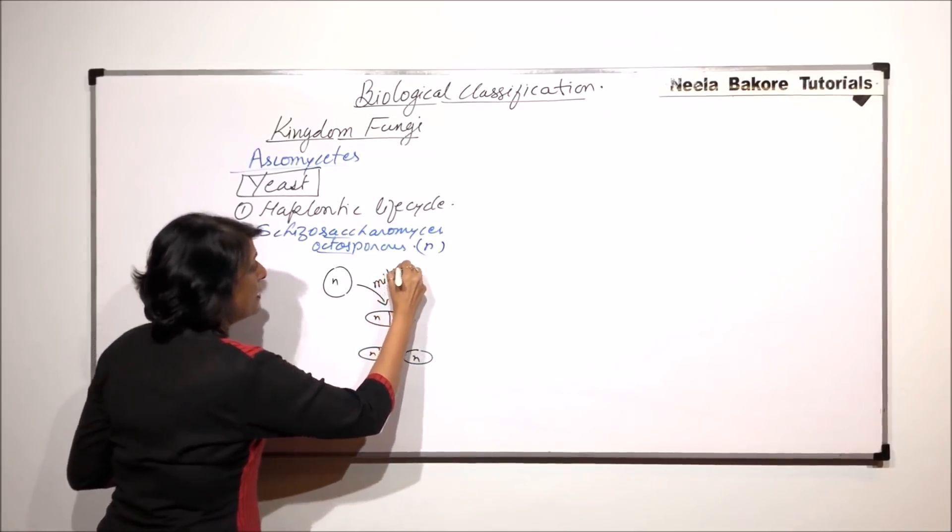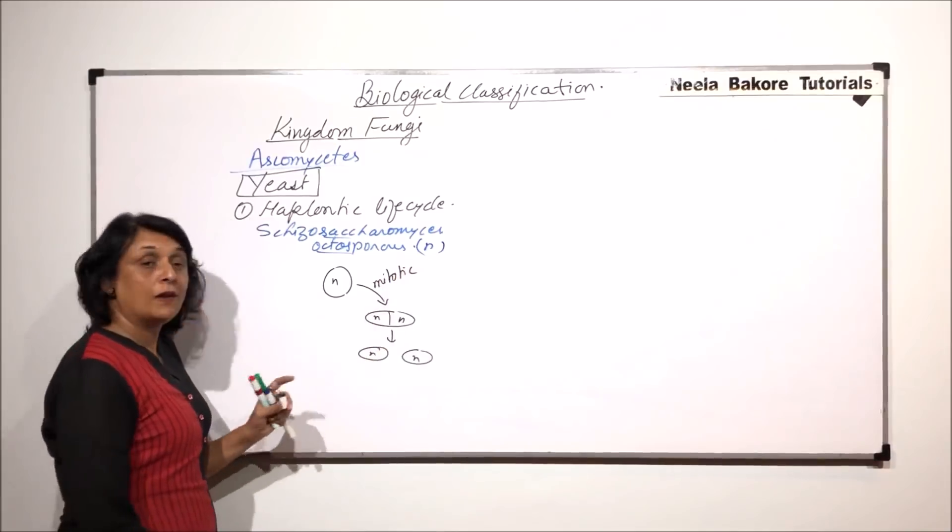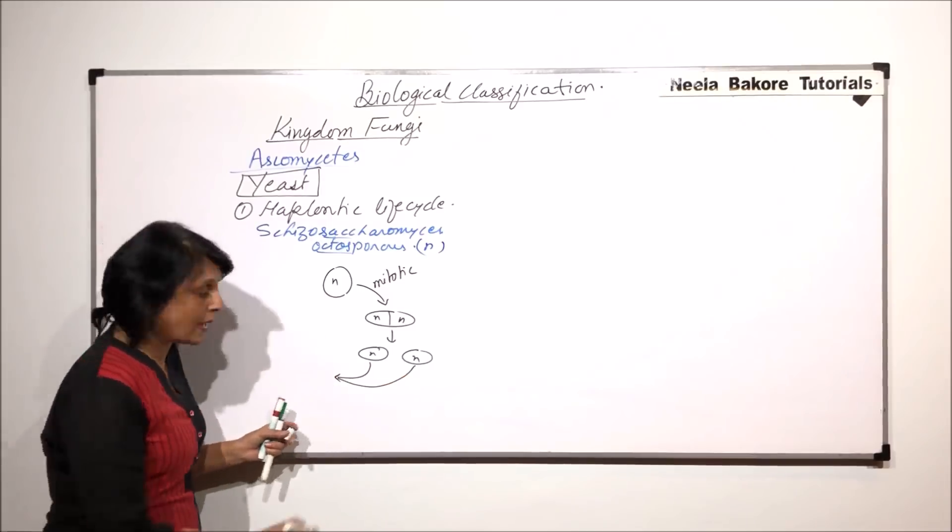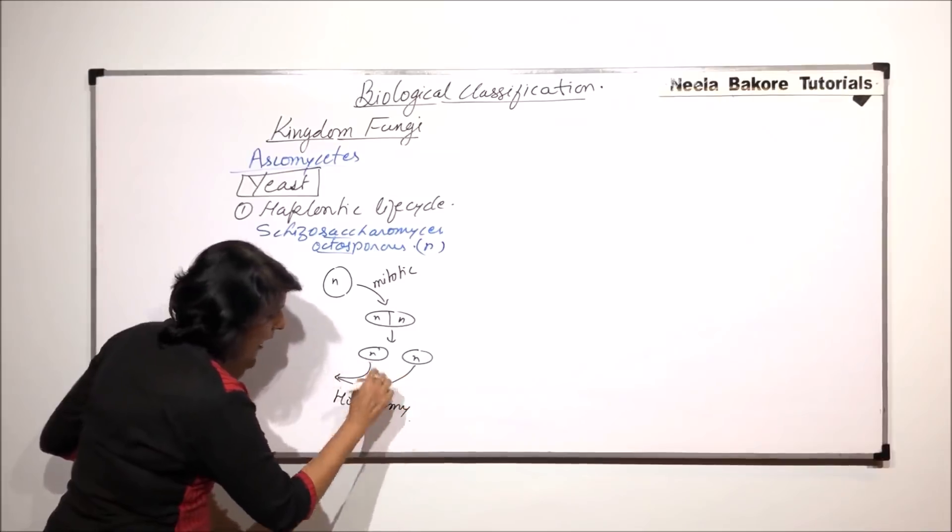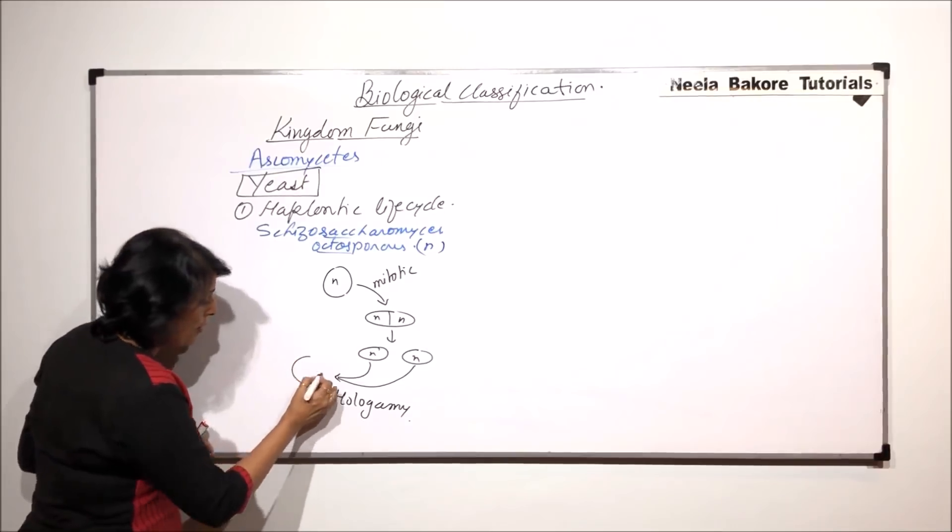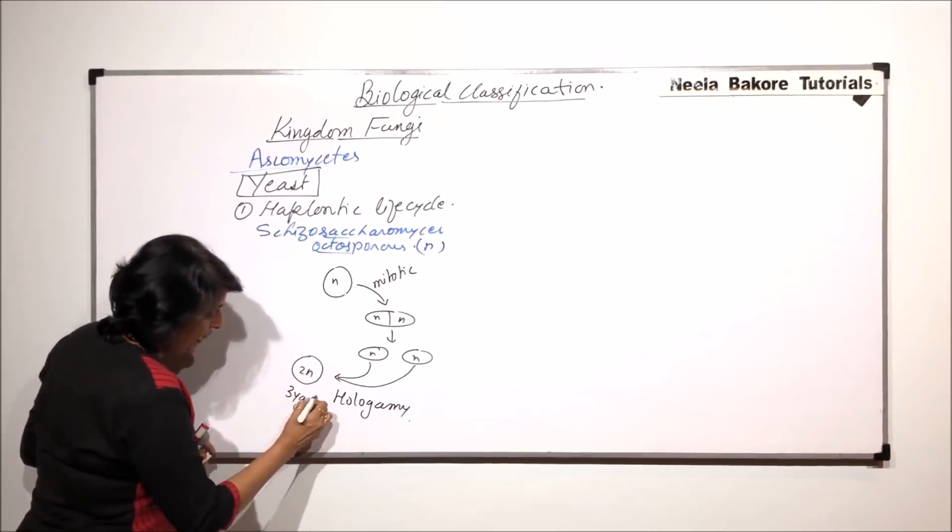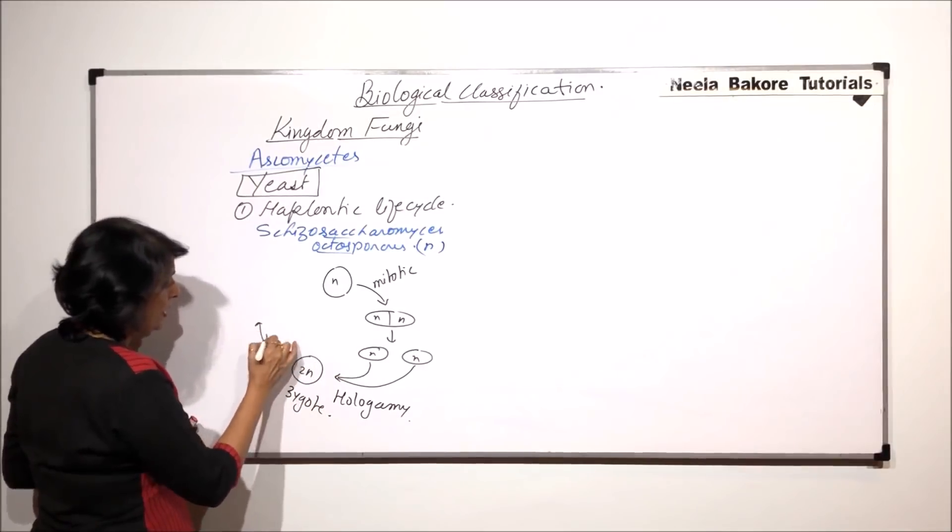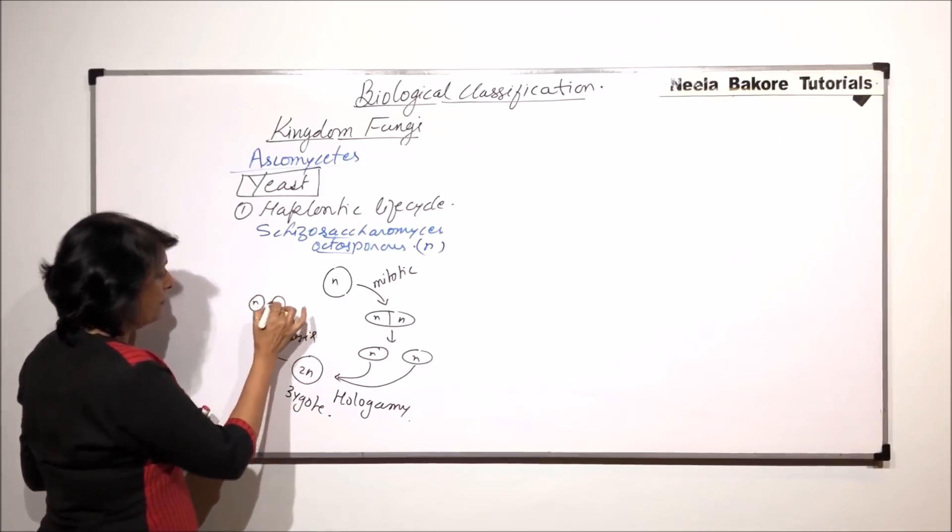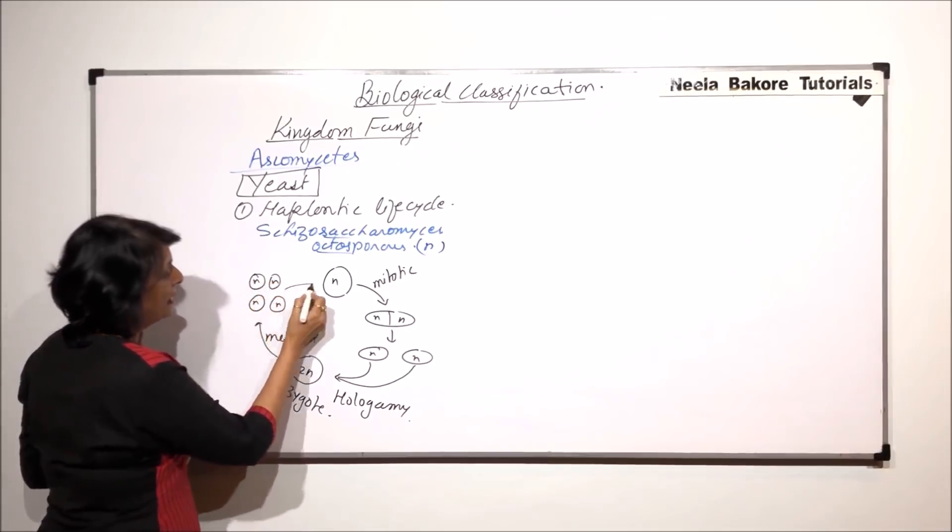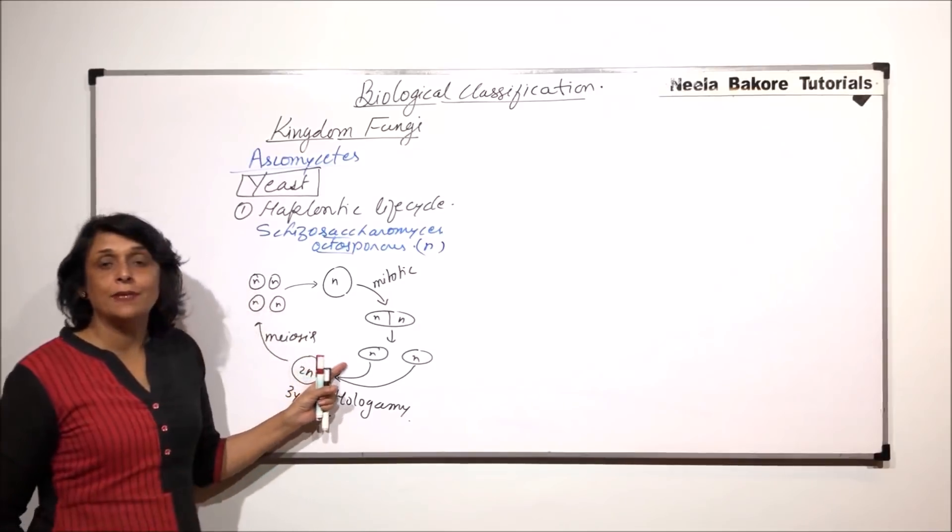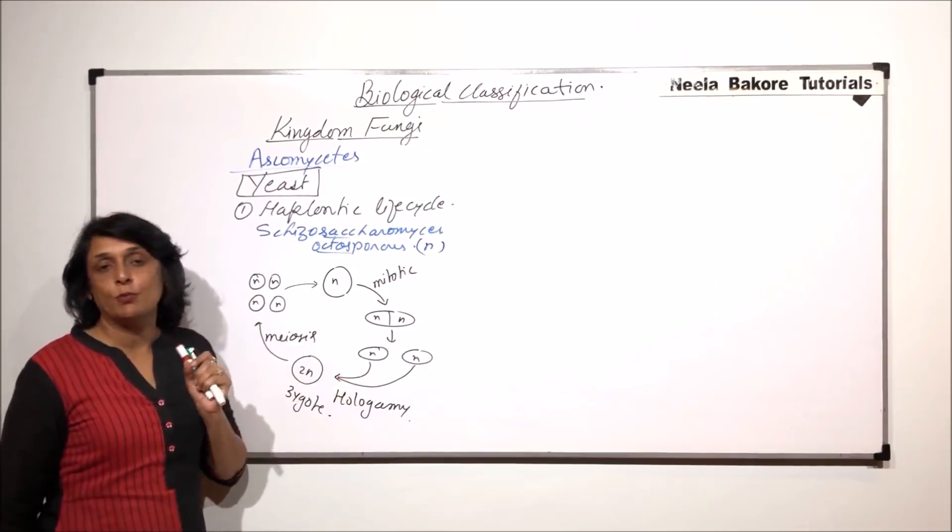Division which is taking place is mitotic division. After this, these cells they undergo hologamy. Hologamy means these two haploid cells which are leading their normal life as haploids, they fuse to form a diploid zygote. Now this zygote, it undergoes meiotic division. When it undergoes meiosis, we find haploid cells form and these haploid cells would again lead their life in the form of haploids. This is what is happening when asexual and sexual reproduction takes place.